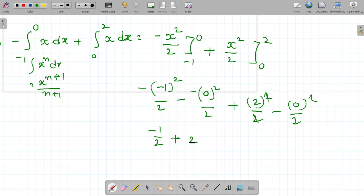So 2 plus 2 is 4. 4 minus 1 by 2. Answer is 3 by 2. Understand? Thanks for watching. 3 by 2.